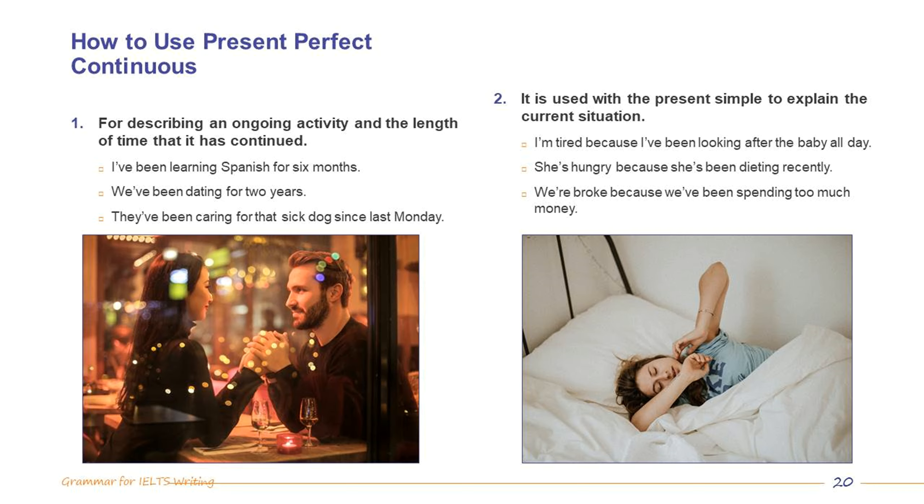Number one, for describing an ongoing activity and the length of time that has continued. I've been learning Spanish for six months. We've been dating for two years. They've been caring for that sick dog since last Monday. Number two, it is used with the present simple to explain the current situation. I'm tired because I've been looking after the baby all day. She's hungry because she's been dieting recently. We're broke because we've been spending too much money.